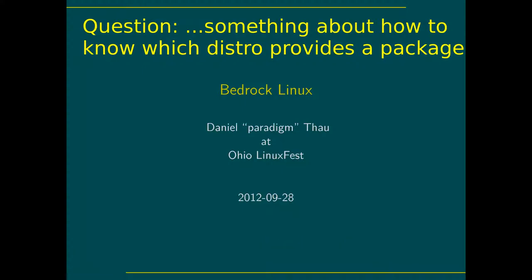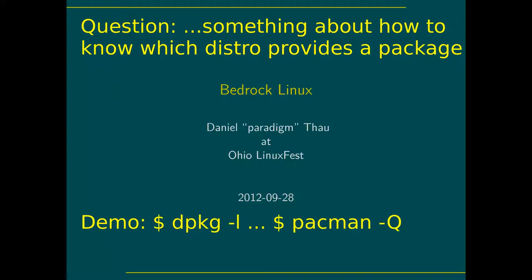The way you currently find which packages are installed is by going to the specific distro and running the command that lists packages. In Debian, there's a list of all Debian packages. In Arch, there's Pacman. I'm hoping the package manager manager will help automate that kind of thing. You have to go to the individual distro now, but I'd like to make it simpler.